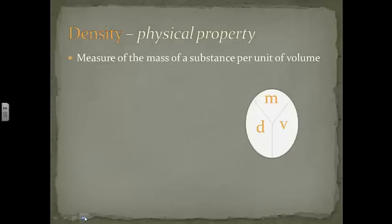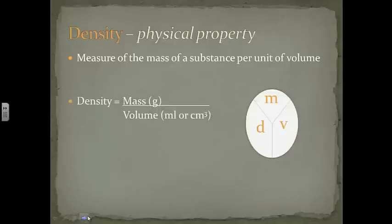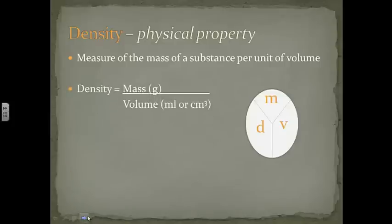Density is the mass of a substance per unit volume of that substance. Equation looks like density equals mass in grams over the volume in milliliters or in cubic centimeters. Milliliters will be a liquid measurement. Cubic centimeters will be something that is solid.